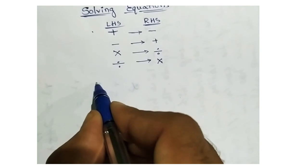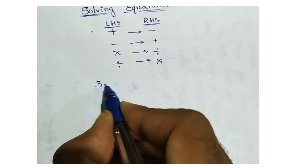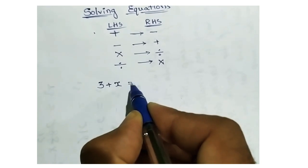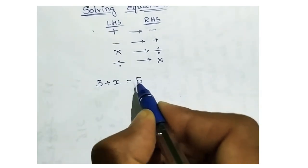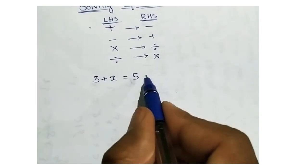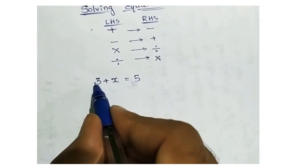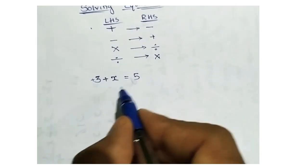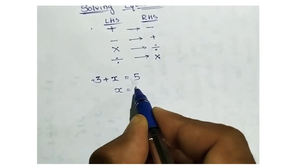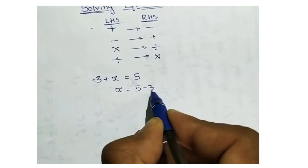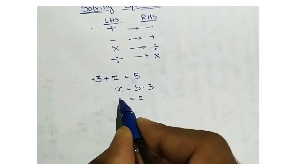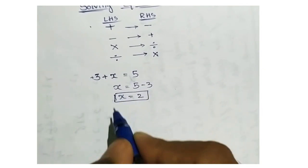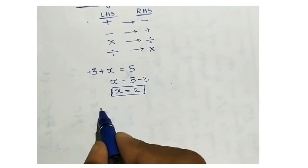Let's take an example. If I take 3 plus x equal to 5, and I take 3 to the right side — here if there is no sign it means plus — so plus becomes minus. It means x equal to 5 minus 3, so 5 minus 3 equal to 2. So x value we got here is 2.